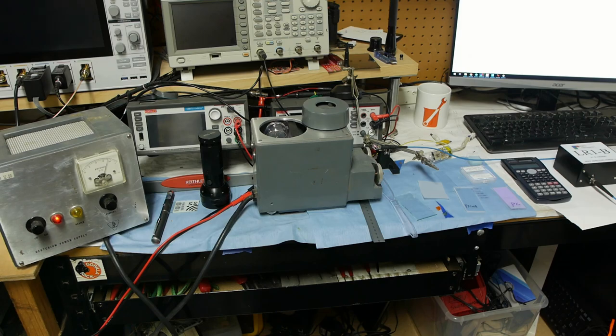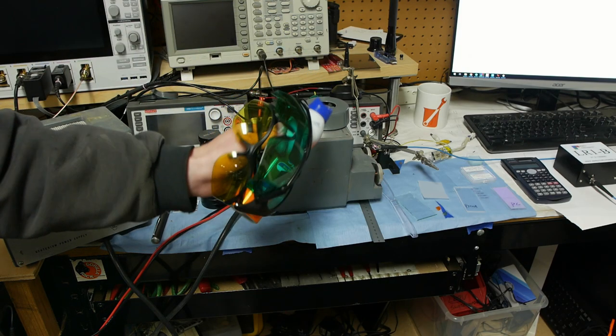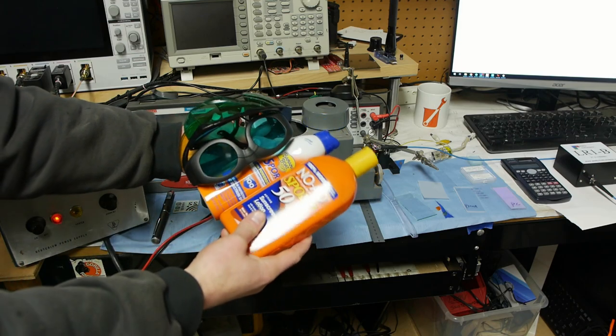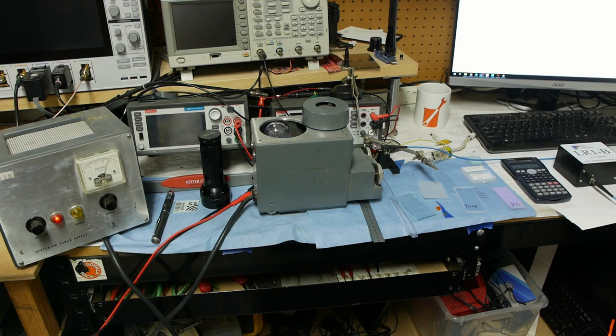Today on Applied Science we're going to talk about ultraviolet light. I'm going to test different ultraviolet safety glasses and different kinds of sunscreen to see how effective they are, and we'll try to answer the age-old question: can you get sunburned through glass?